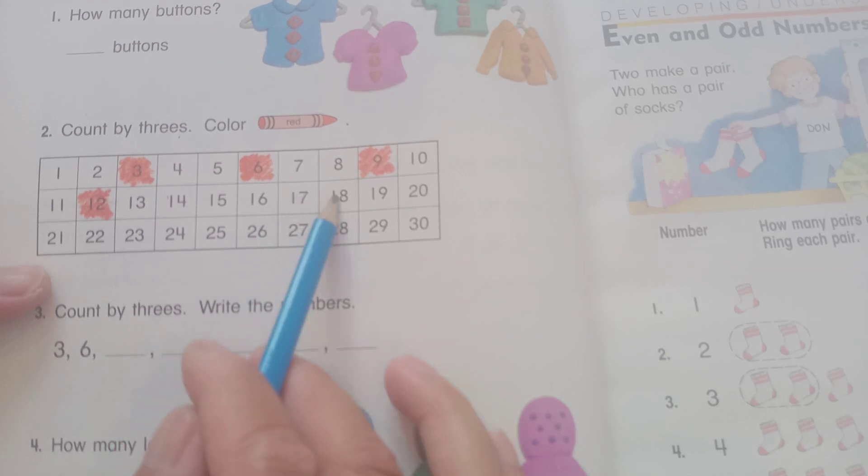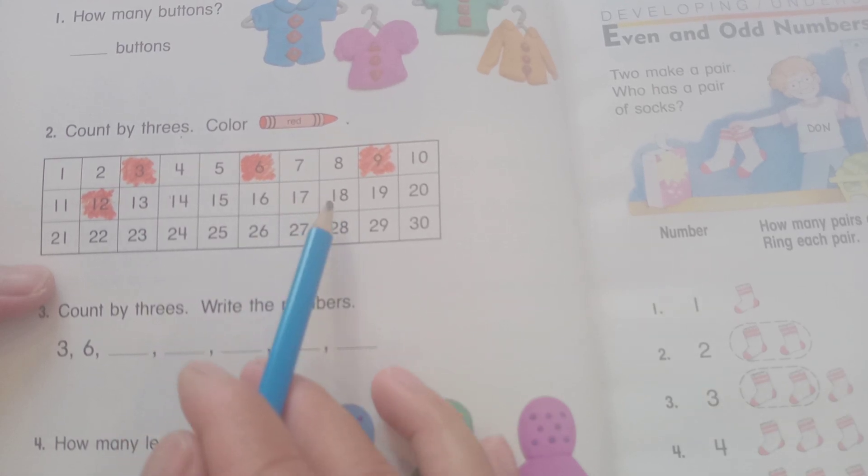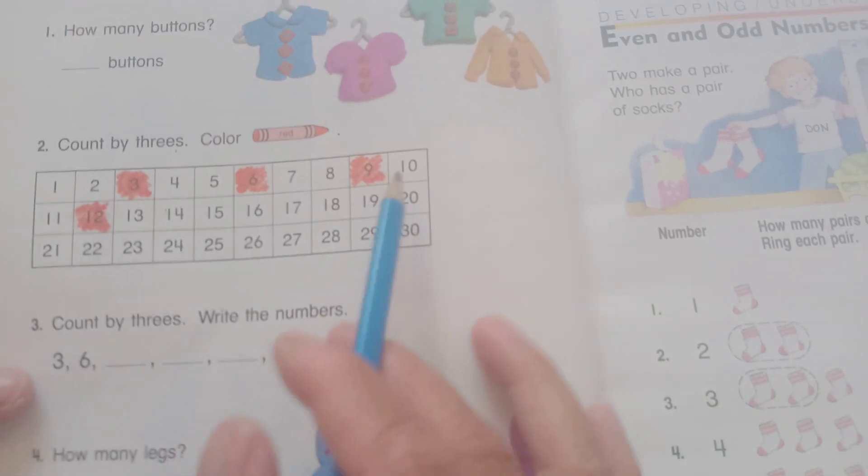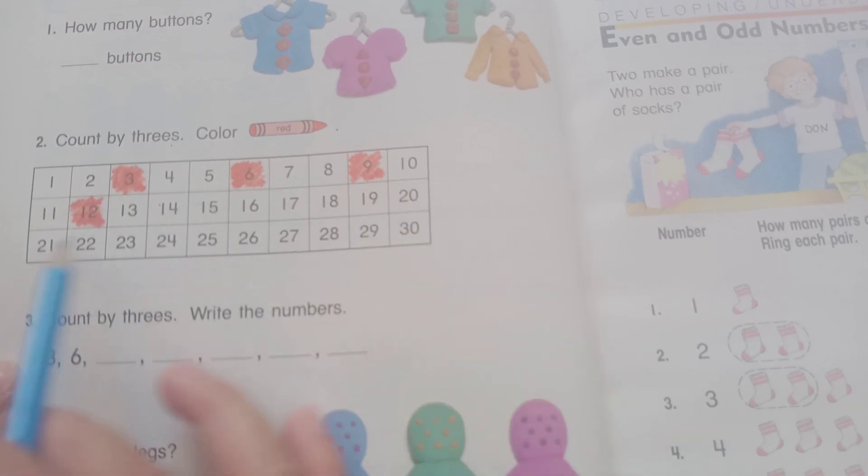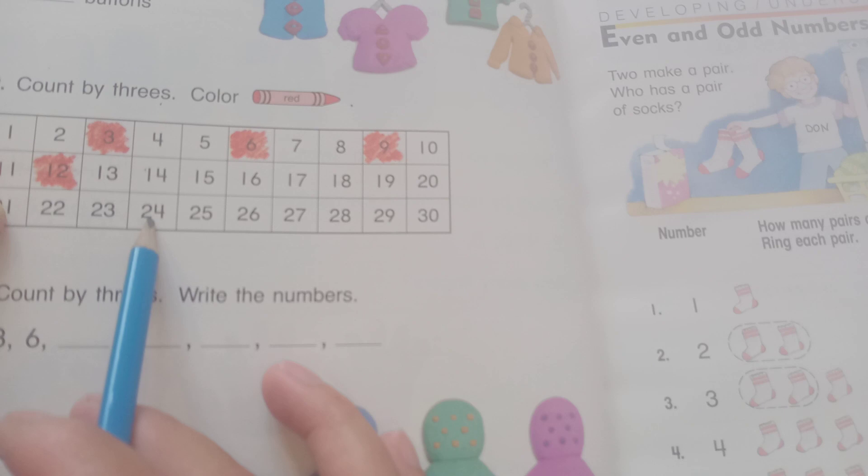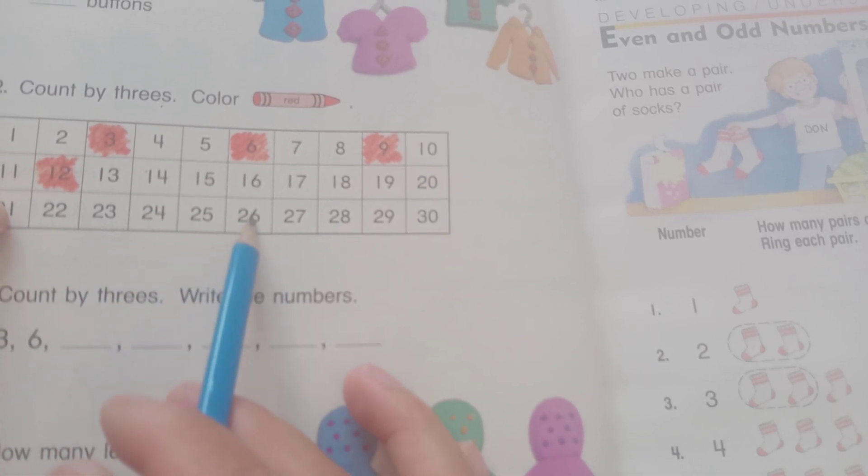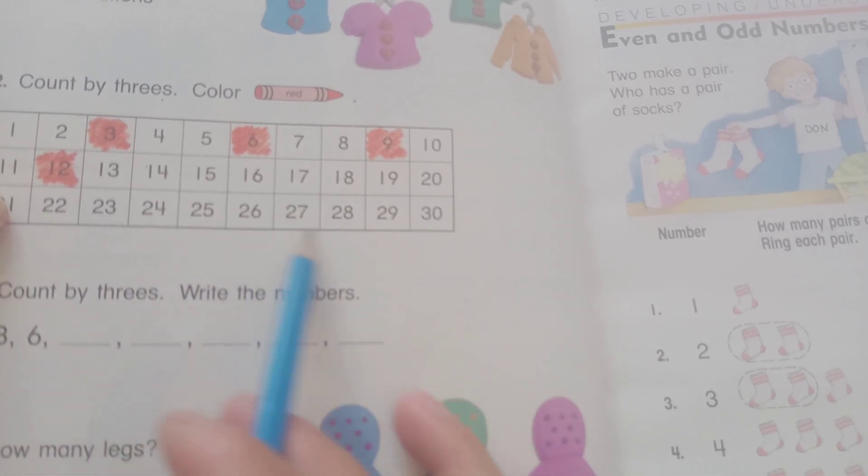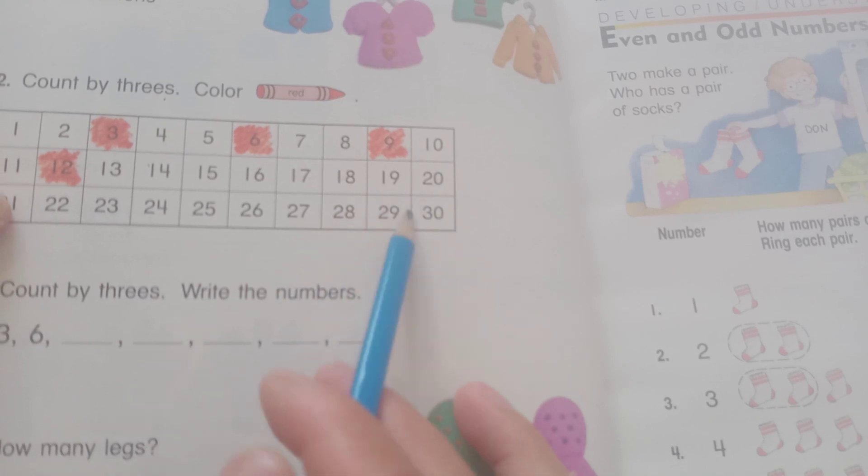Continuing the pattern: ten, eleven, twelve. Nineteen, twenty, twenty-one. Twenty-two, twenty-three, twenty-four. Twenty-five, twenty-six, twenty-seven. Twenty-eight, twenty-nine, thirty.